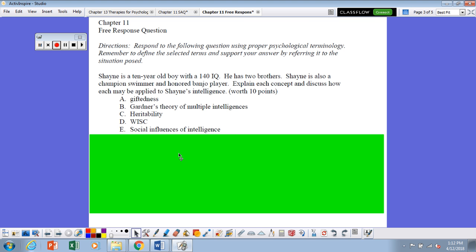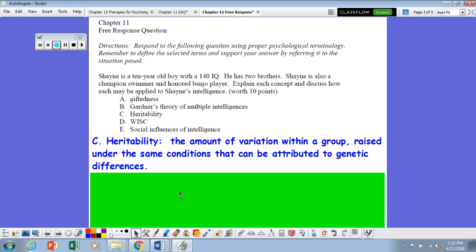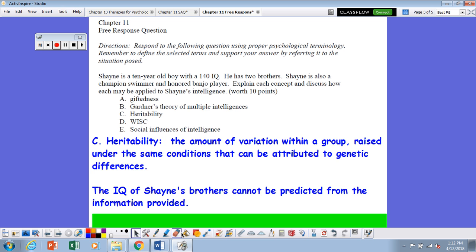Letter C, heritability. Heritability is the amount of variation within a group raised under the same circumstances that can be attributed to genetic differences. Shane's brothers' IQ cannot be predicted from the information provided, but if we had those numbers, we might be able to determine if there was certain genetic variability here.